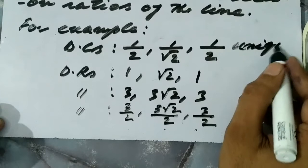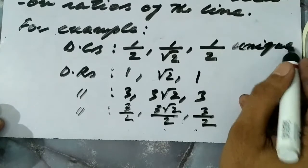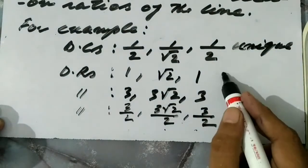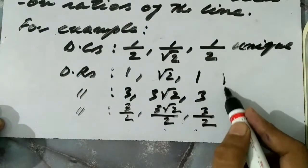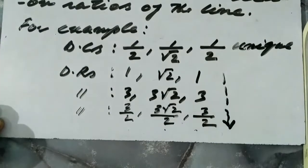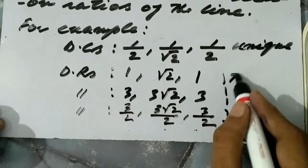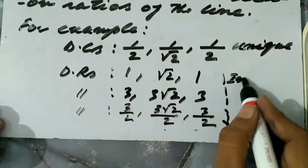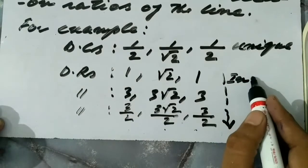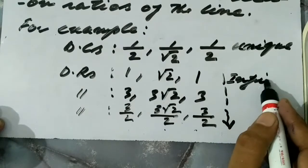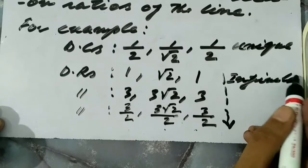So we come to the conclusion that direction cosines are unique, but the direction ratios are infinite.